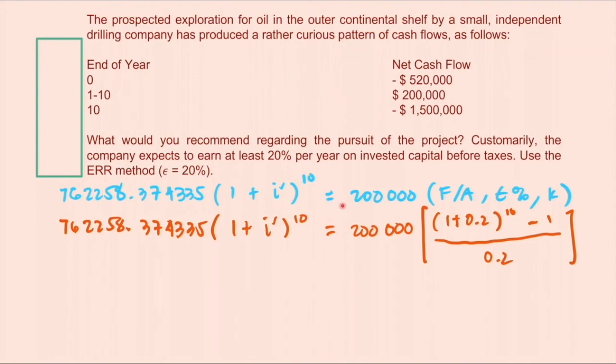And that is equated to the future worth of the benefits. So $200,000 times 1 plus 0.2 raised to 10 minus 1 divided by 0.2.